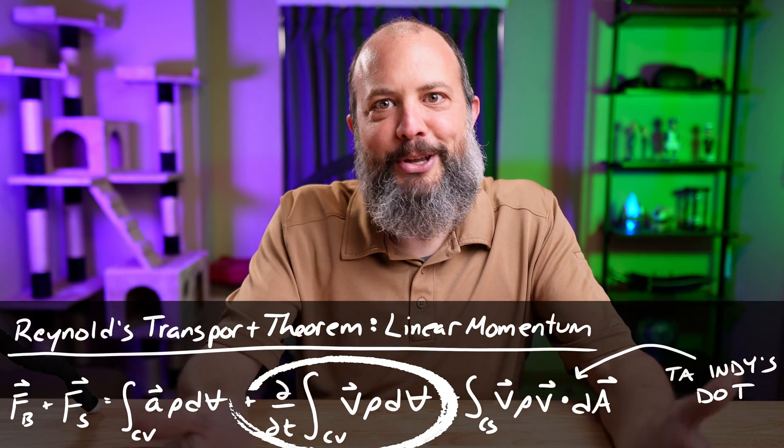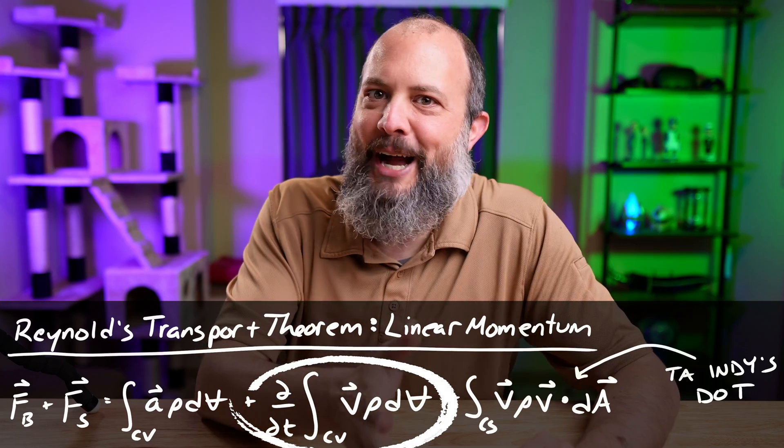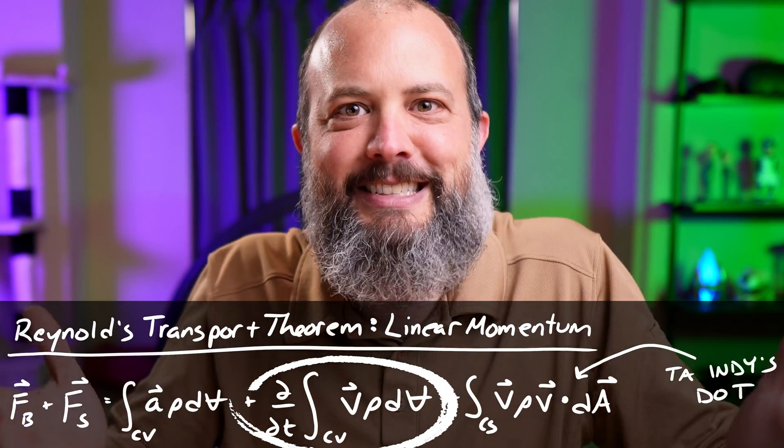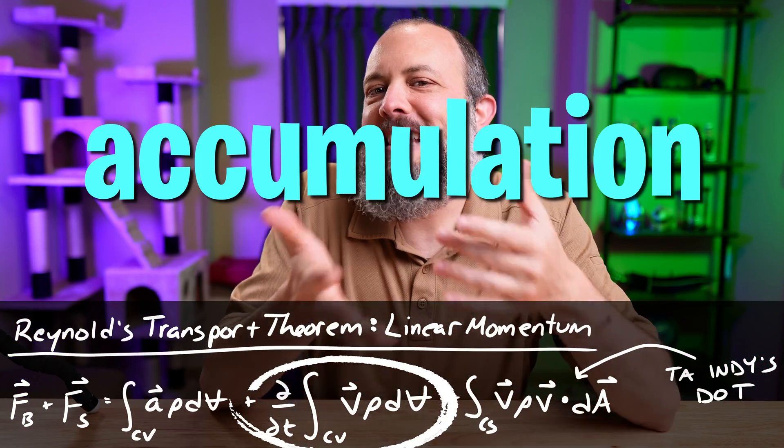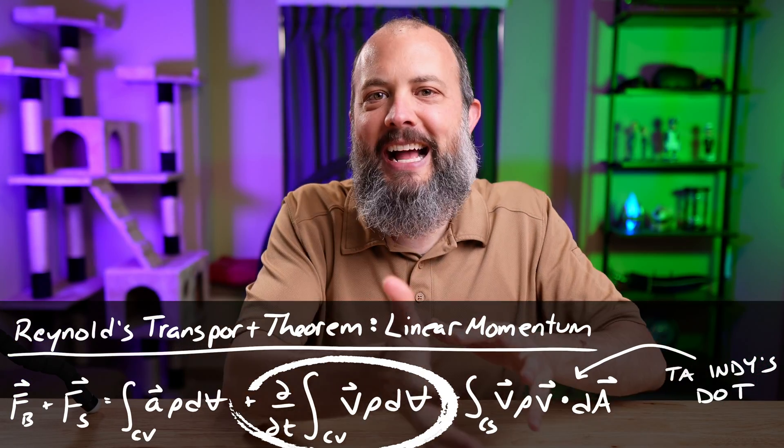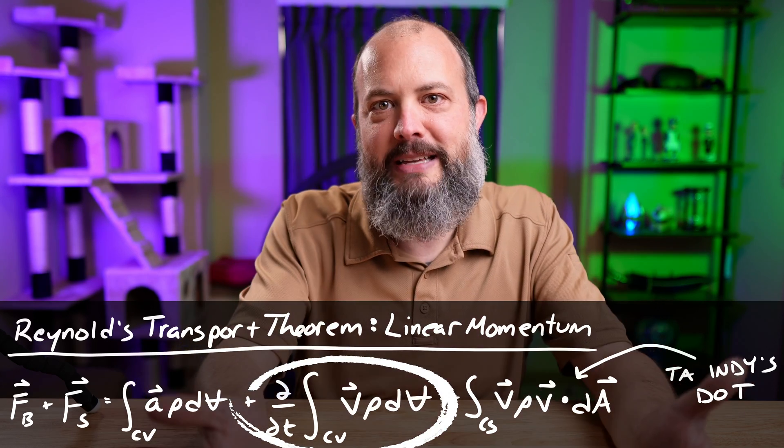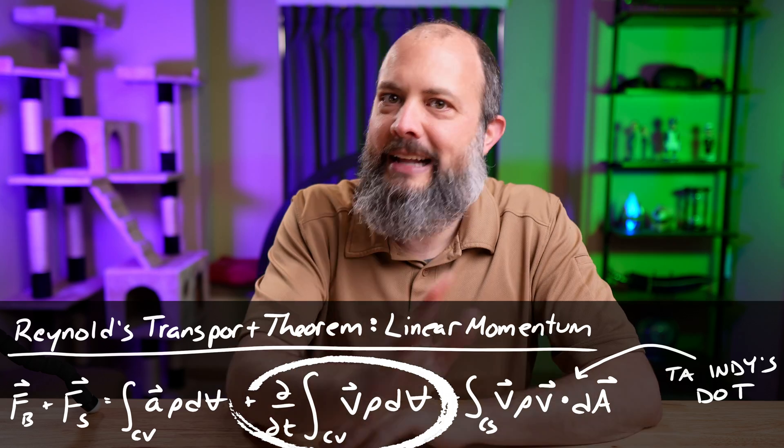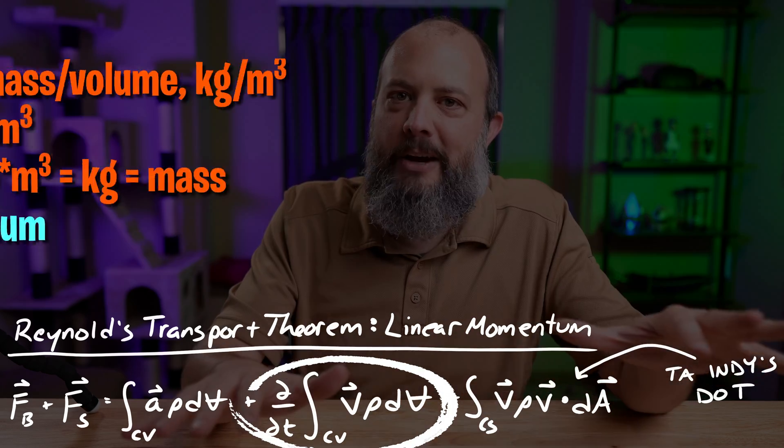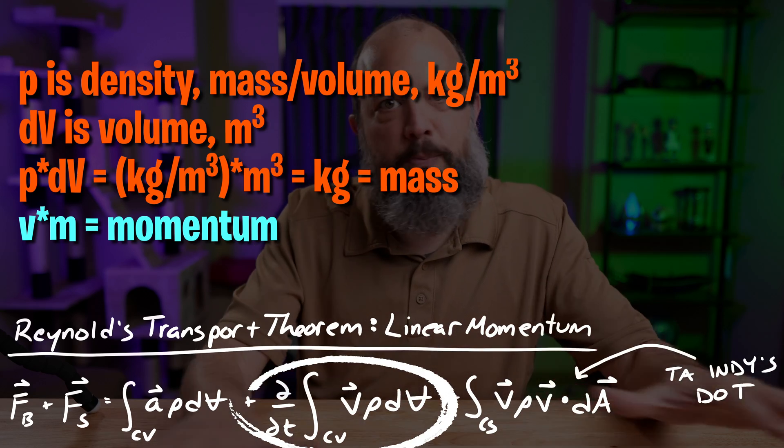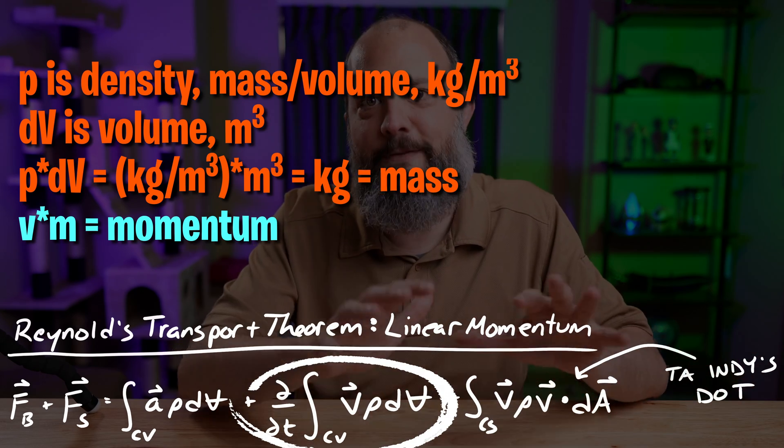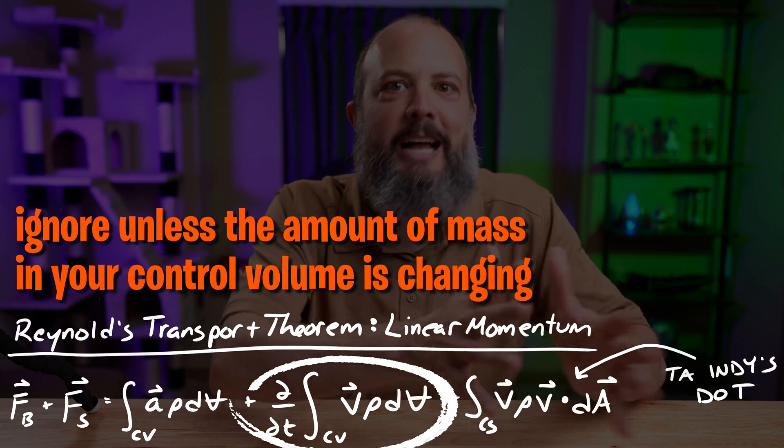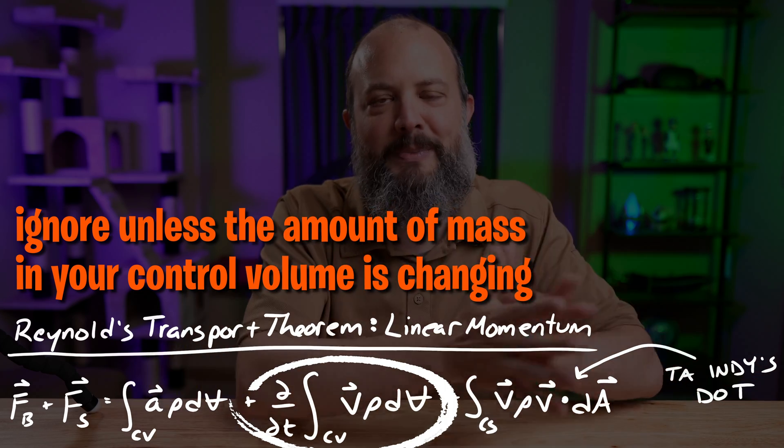Middle integral, the scariest looking one of all, since it's a partial time derivative of an integral over the control volume. What the heck even is this term? You can think of this as an accumulation term. The partial derivative with respect to time indicates that it's time-based. So if your problem is at steady state or steady flow, that lets you cross off and ignore this middle problem. And that'll probably be every momentum problem you'll have in this class will probably be steady flow. So my prediction is that every single time you will cross off this time derivative, partial derivative term because you have steady flow.